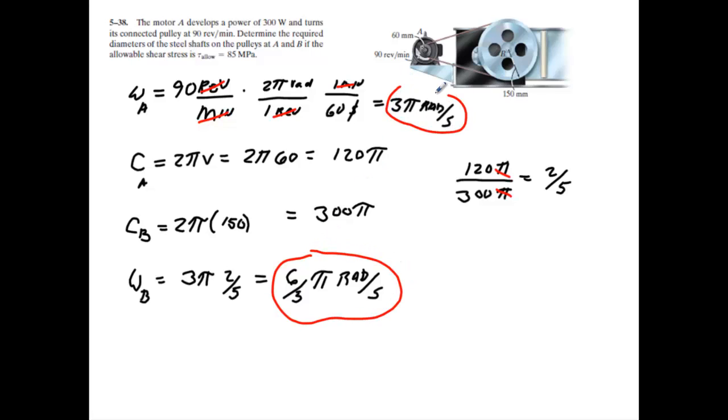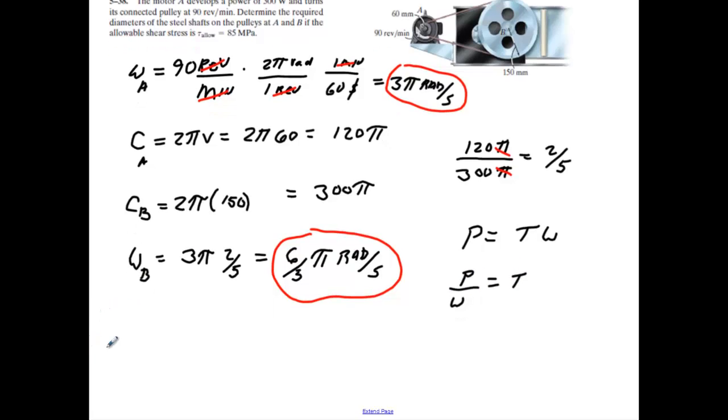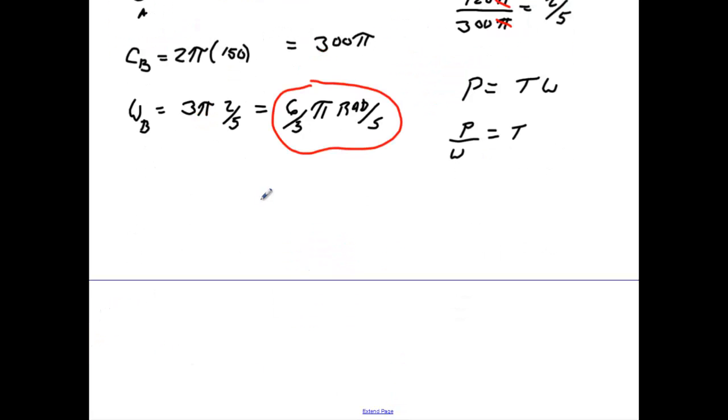So these are our two angular velocities. And now all we have to do is go back and we know that power is equal to torque times our angular velocity. So we know that power over angular velocity is equal to torque. Scroll down and we'll figure those out real quick.